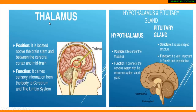Now the second part of the forebrain is known as the thalamus. The thalamus is located above the brain stem and between the cerebral cortex and the midbrain. Its function is to carry sensory information from the body to the cerebrum and the limbic system, connecting different parts of the body with the cerebrum.